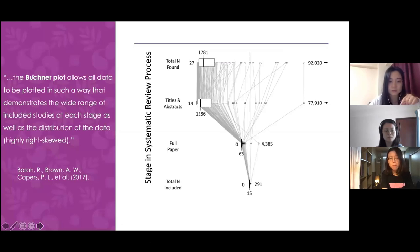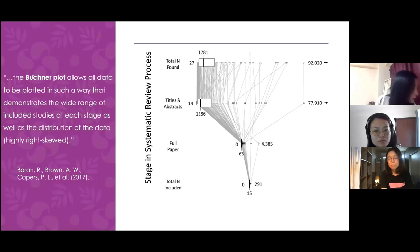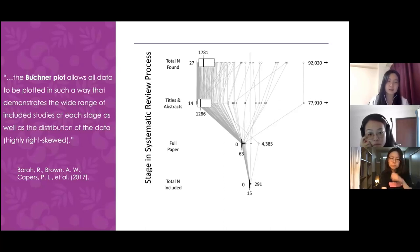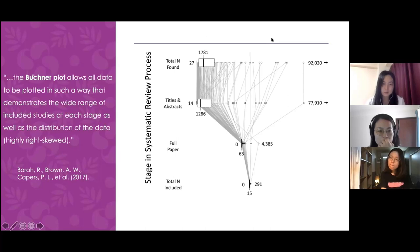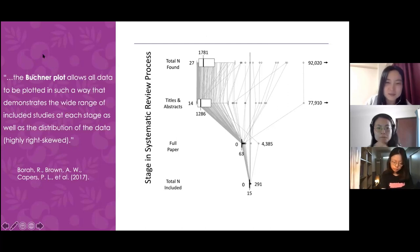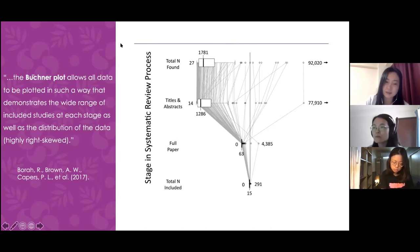This slide shows an example from a healthcare and medical research article. It's a visual representation — I think it's called a PRISMA plot or BUTCHER plot — showing what kind of process and how the filtering process works in their study. It's a pretty clear visual of how they narrow down their selection of studies. You can check it if you're interested.